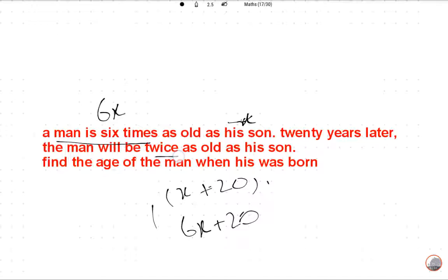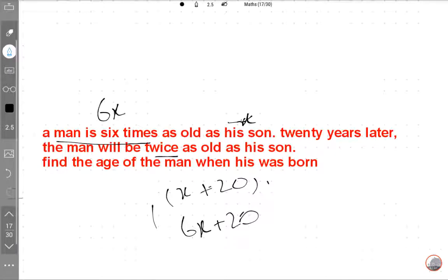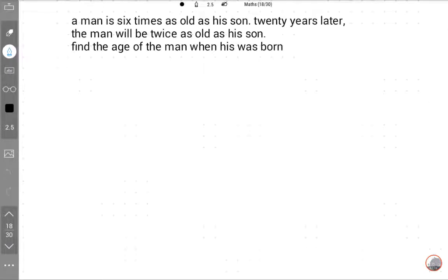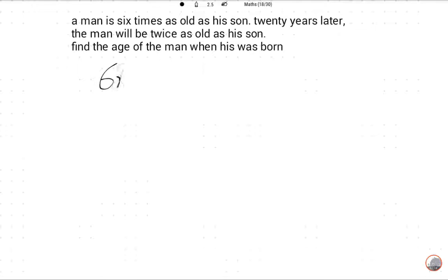Twice, okay. Find the age of the man. Now we will solve this on the next page. The corresponding equation will be age of man after 20 years will be twice as old as his son, twice of his son.